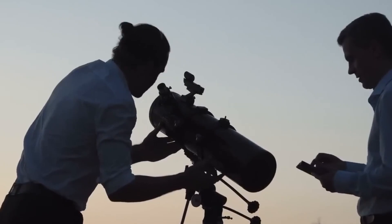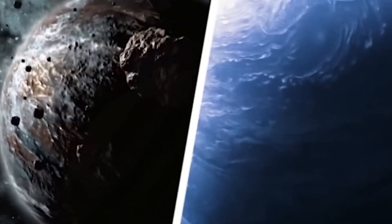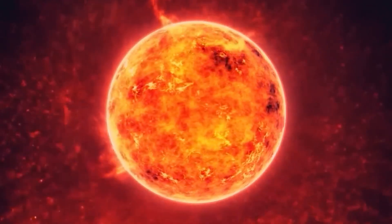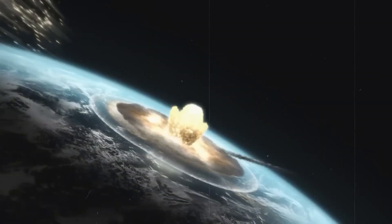In October 2017, astronomers made a groundbreaking discovery that would captivate the world and challenge our understanding of the cosmos. An object unlike any other, named Oumuamua, was detected by the Pan-STARRS-1 telescope in Hawaii. This visitor from beyond our solar system moved too fast to be bound by the sun's gravity, indicating its interstellar origin. This was the first time humanity had encountered an object from another star system up close.